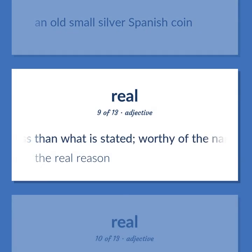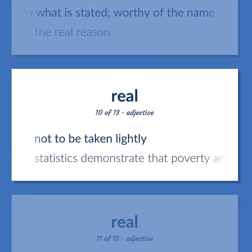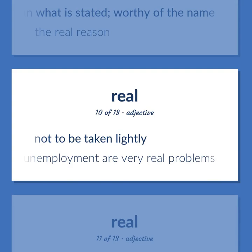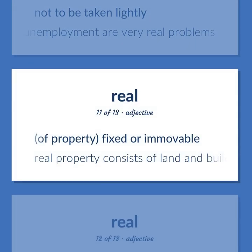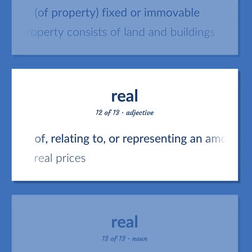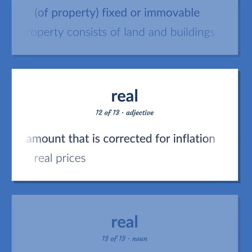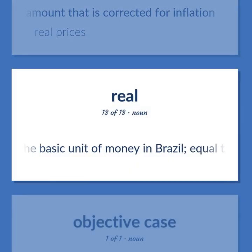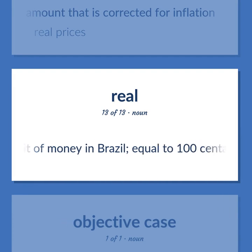Coinciding with reality. No less than what is stated — worthy of the name. The real reason. Not to be taken lightly. Statistics demonstrate that poverty and unemployment are very real problems. Of property — fixed or immovable. Real property consists of land and buildings. Of or relating to or representing an amount that is corrected for inflation. Real prices. The basic unit of money in Brazil, equal to 100 centavos.